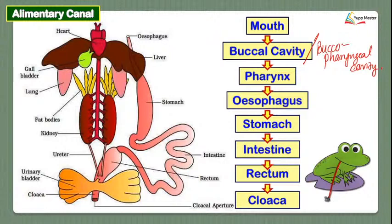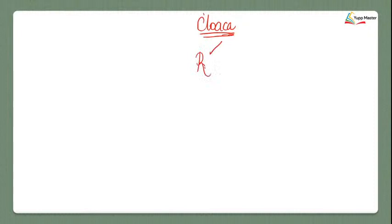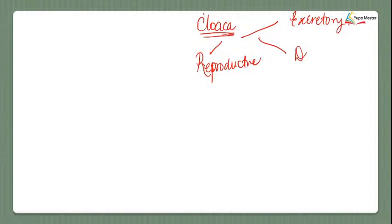To summarize: starting with the mouth, then the buccal cavity, then the pharynx, then the esophagus, then the stomach, then the intestine (small and large intestine), then the rectum, and finally the cloaca. The cloaca is a common opening for the reproductive, excretory, and digestive systems.